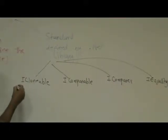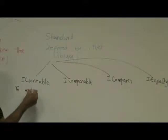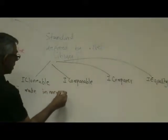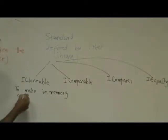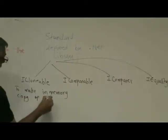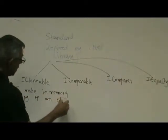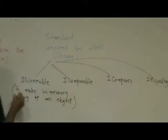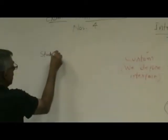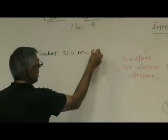Purpose of ICloneable is to make in-memory copy of an object. Okay. See, for example, in C-sharp, exactly like Java, okay, suppose you created a class, let's say,